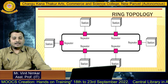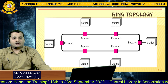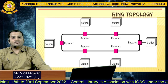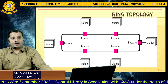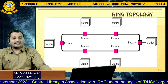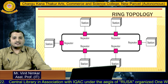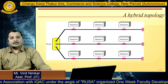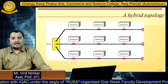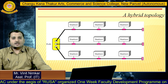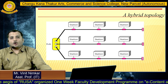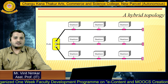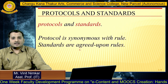Ring topology — as the name suggests, each device is connected in the form of a circular link. In ring topology, data can travel only in one direction and only one device can transmit at a time. Next is hybrid topology — it is not considered a separate topology, but a combination of bus topology, mesh topology, and star topology.